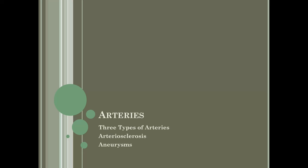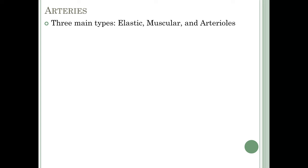Now we'll go into more detail on arteries — the three types of arteries — and also arteriosclerosis and aneurysms. There are three main types: elastic arteries, muscular arteries, and arterioles. Before going into those three types, I want to introduce two important characteristics of most arteries.